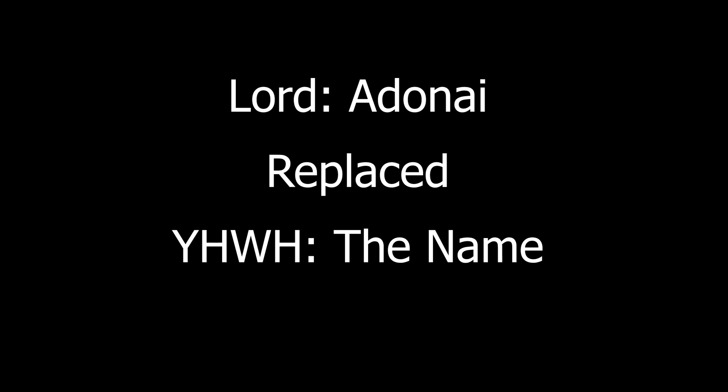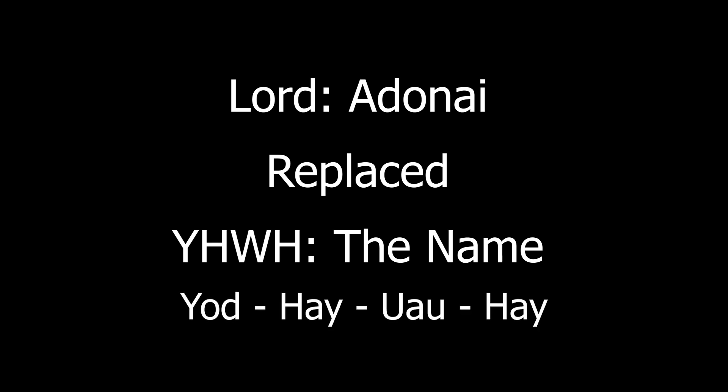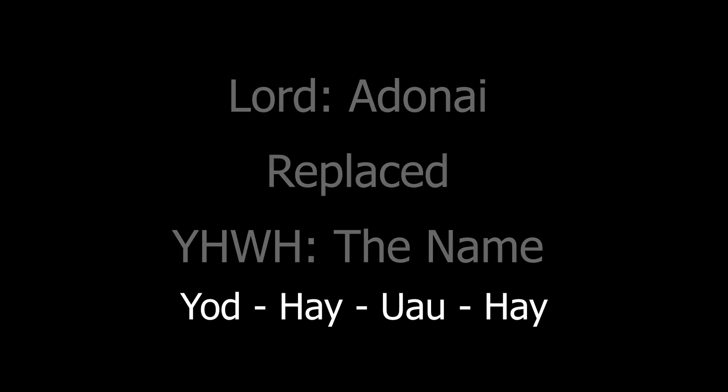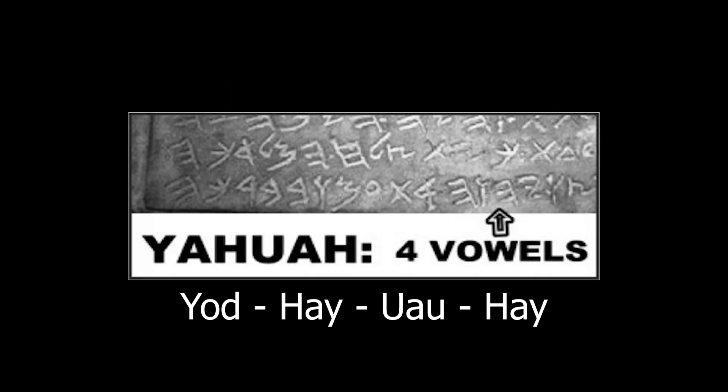Translators adopted the word Lord to replace the Iberith — Hebrew — name Yahuwah. It is number H3068 and found in the writing of truth at least 6,823 times in the four vowels Yod-Heh-Uah-Heh. The term Tetragrammaton is Greek, meaning four letters.